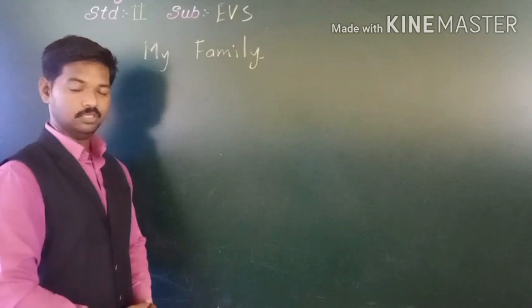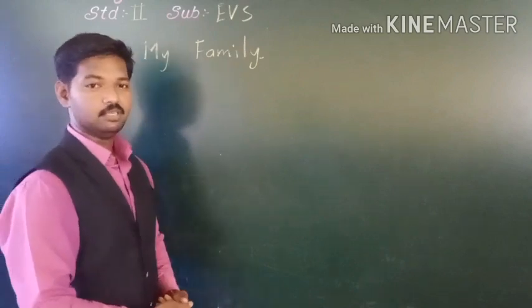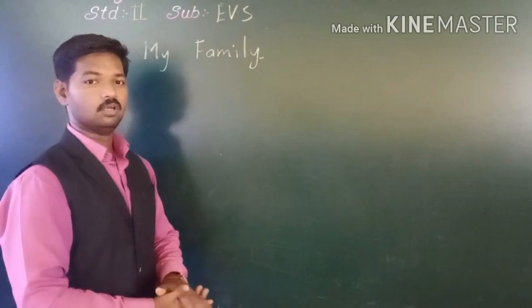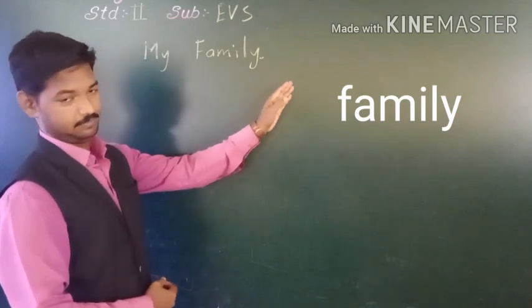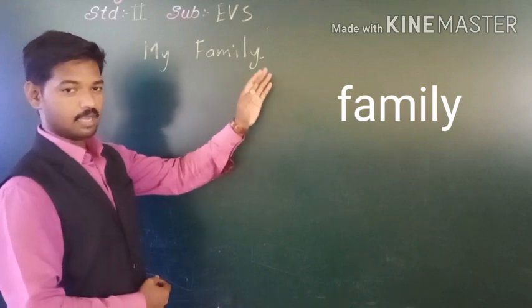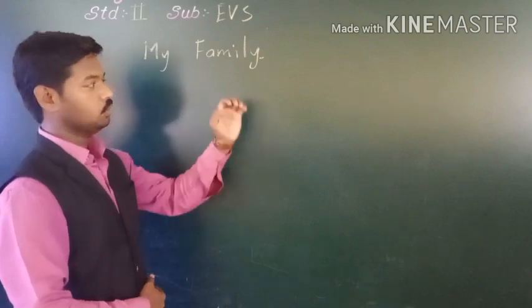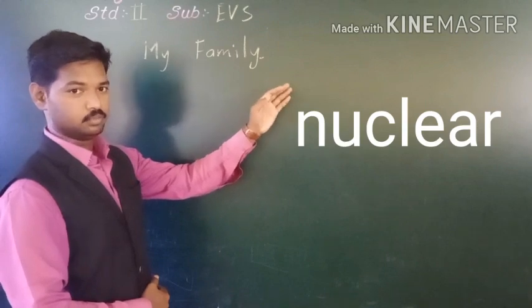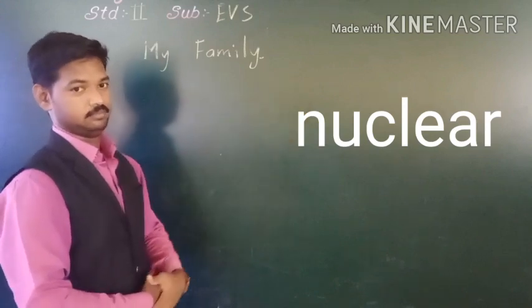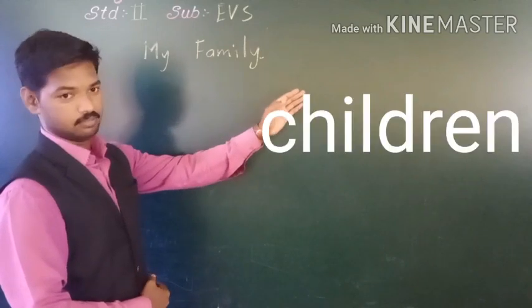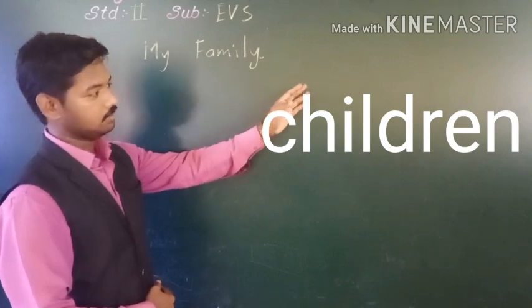Now students, I will give you new words from whatever we have learnt today. You have to copy these new words in your notebook, and also underline all these words in your textbook. Number one: family — F A M I L Y. Number two: nuclear — N U C L E A R. Number three: children — C H I L D R E N.